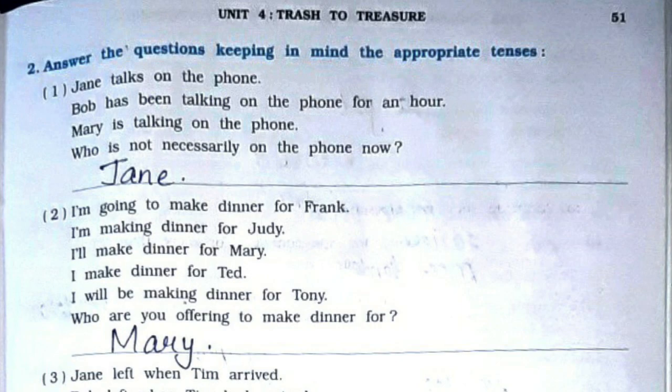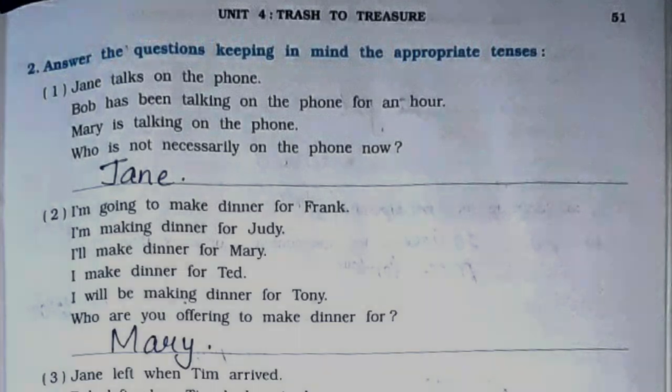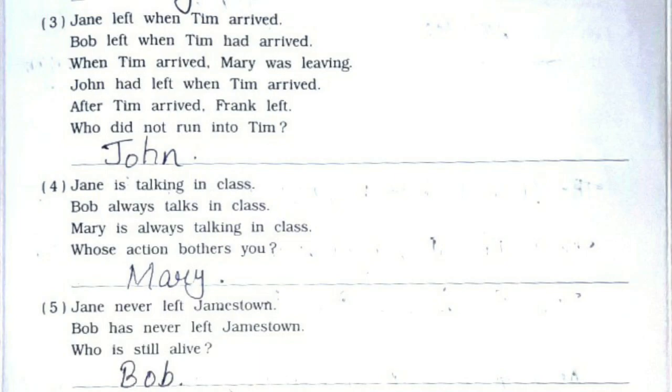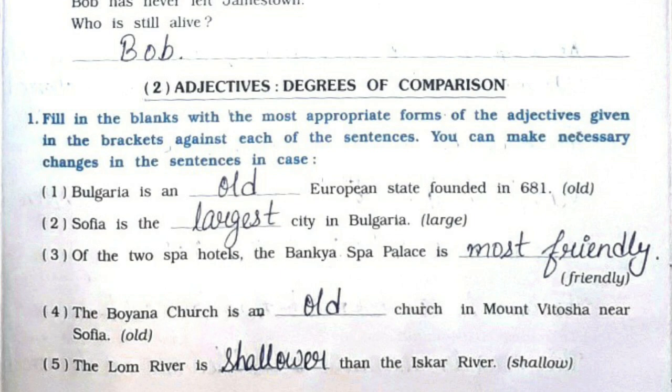Now we'll see question number two: answer the questions keeping in mind the appropriate tenses. First answer is Jane. Second one is Mary. Third one is John. Fourth one is Mary. Fifth one is Bob.